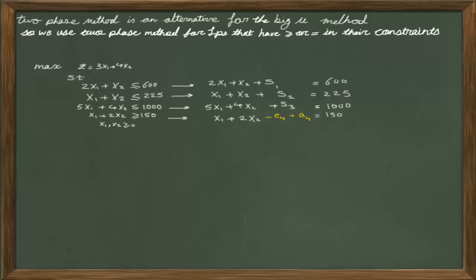In the first phase, our objective is to minimize the summation of all artificial variables in the problem. At the end of the first phase, if we reach a point where there is no artificial variable in the basis, we have a feasible solution. In this example, we have just one artificial variable A4, so our objective function in phase 1 is to minimize A4.